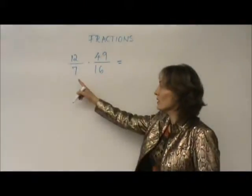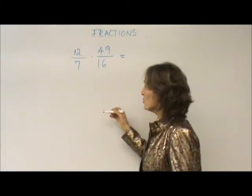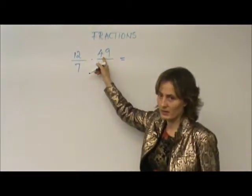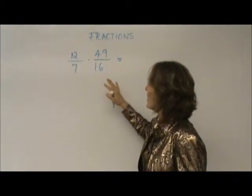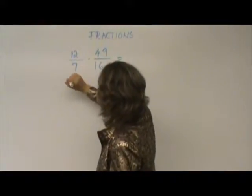When you multiply fractions, you do not need the same common denominator. All you have to do is straight multiply. But, as you see, 12 times 49 is a big number. 7 times 16, so it's okay. But, the shortest route is simplification.